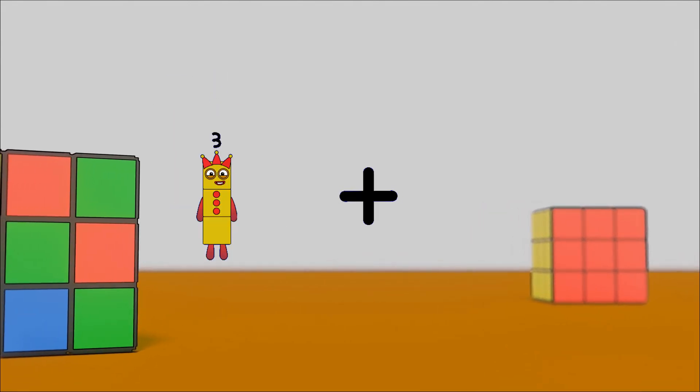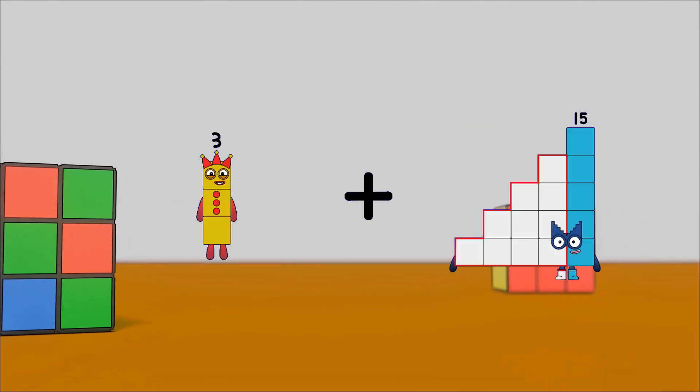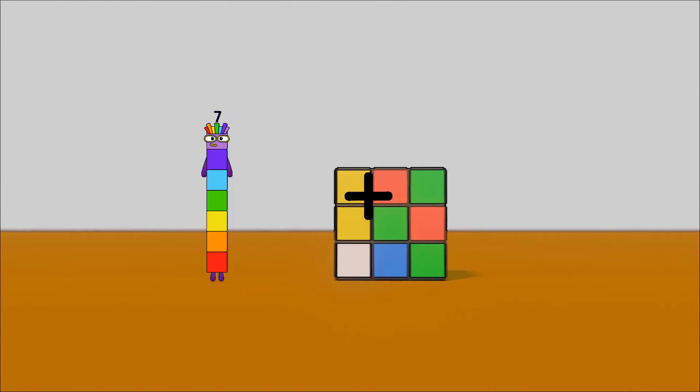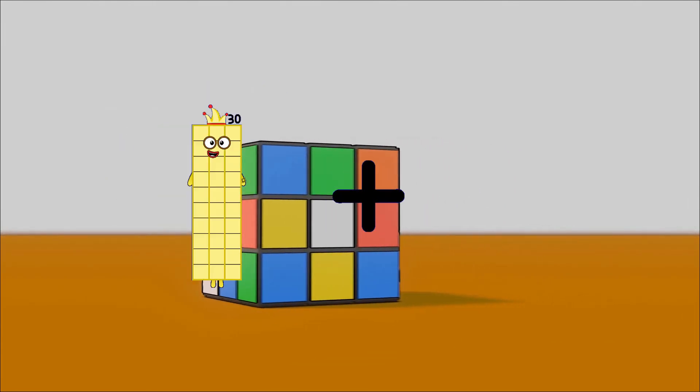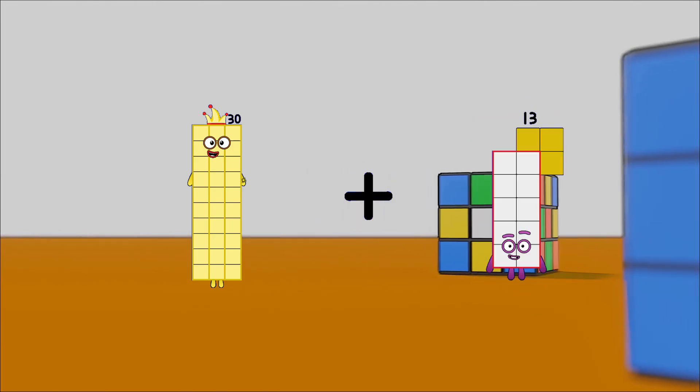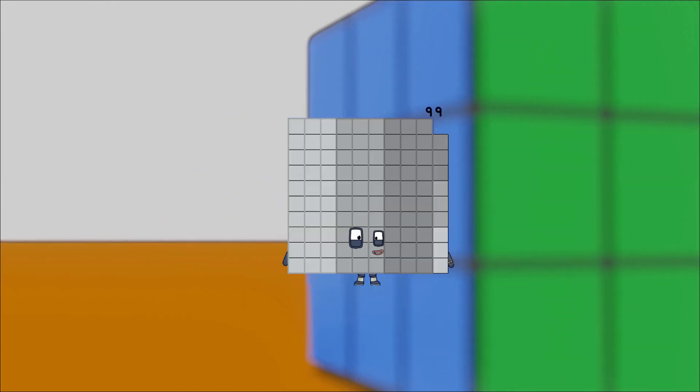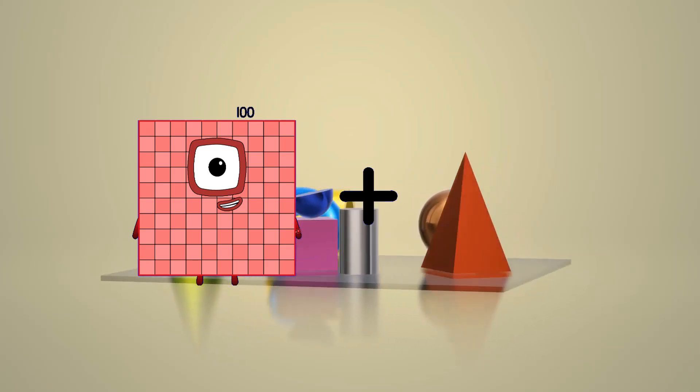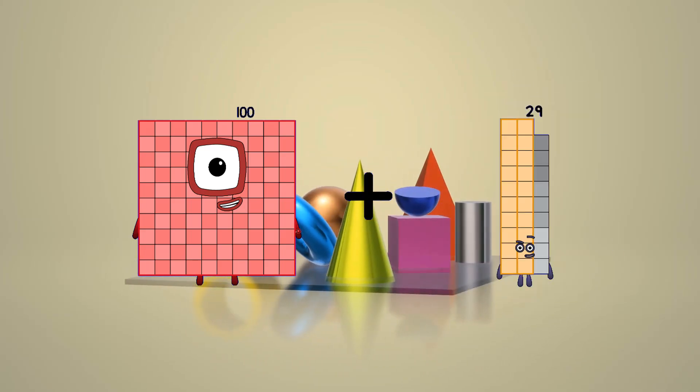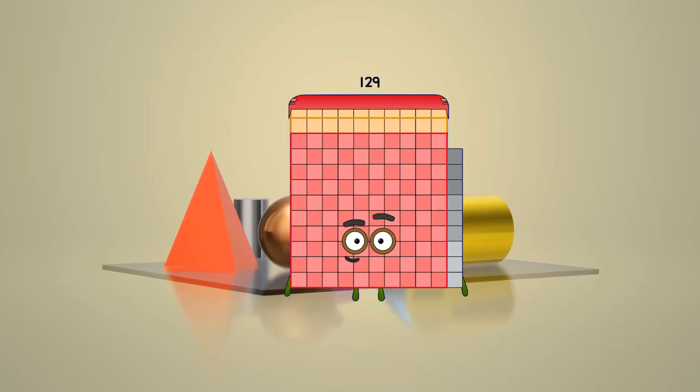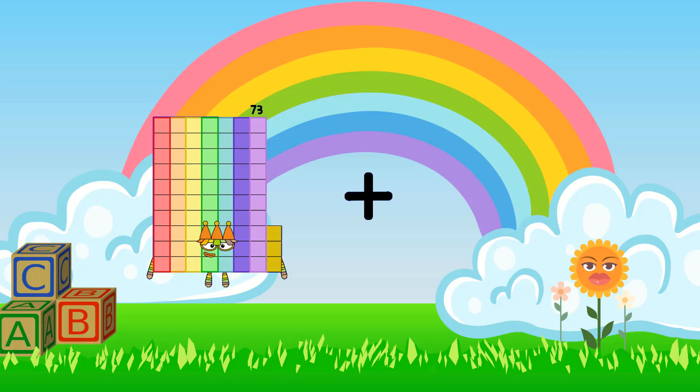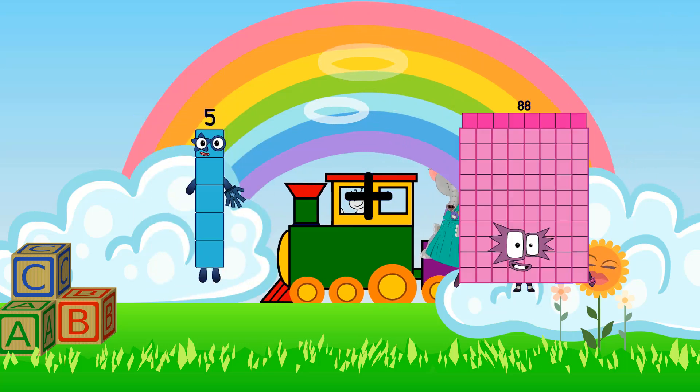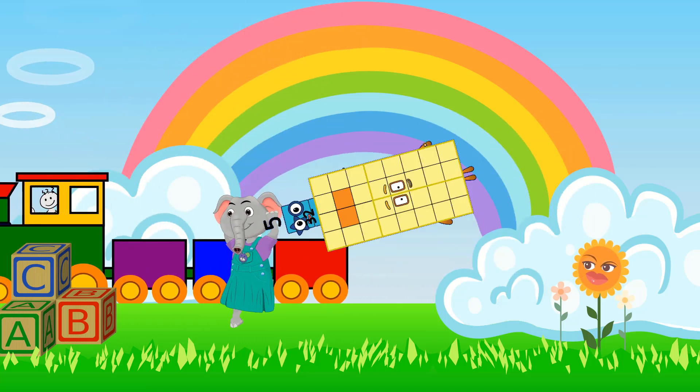3 plus 79 equals 82. 30 plus 69 equals 99. 100 plus 29 equals 129. 5 plus 32 equals 37.